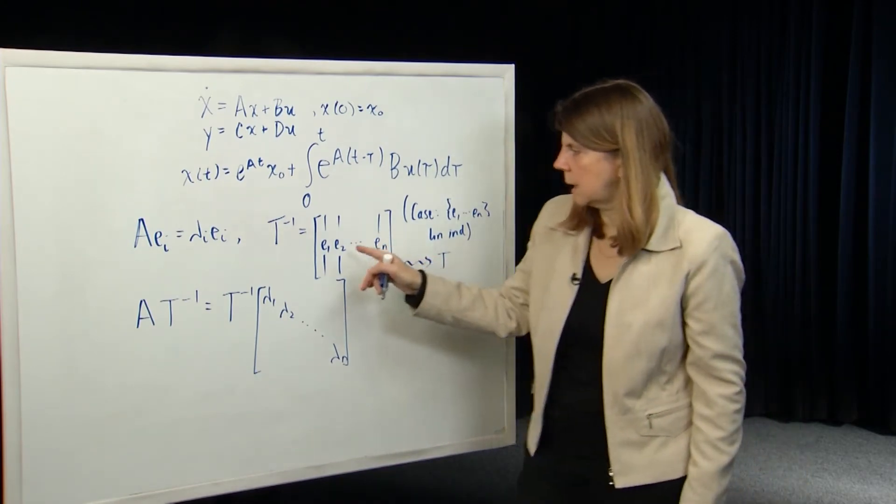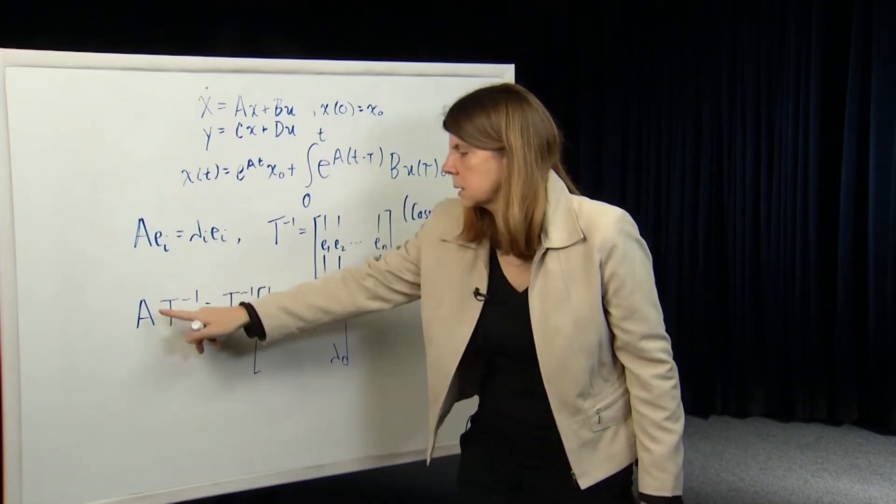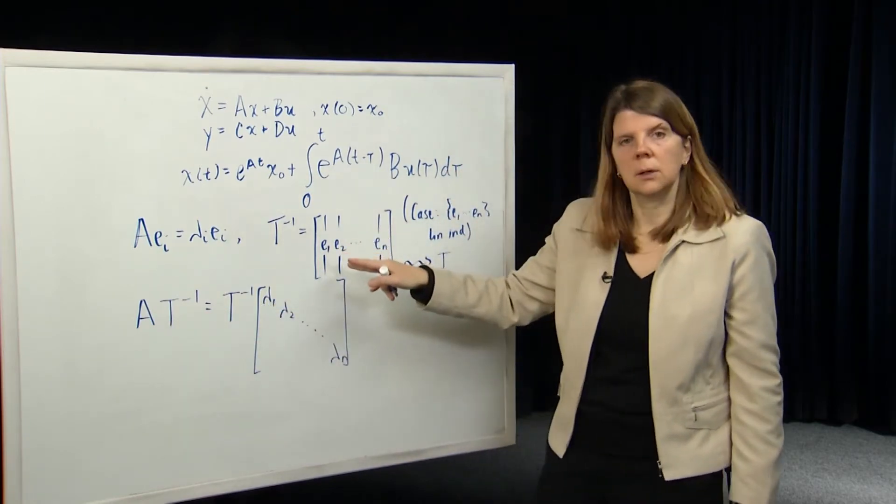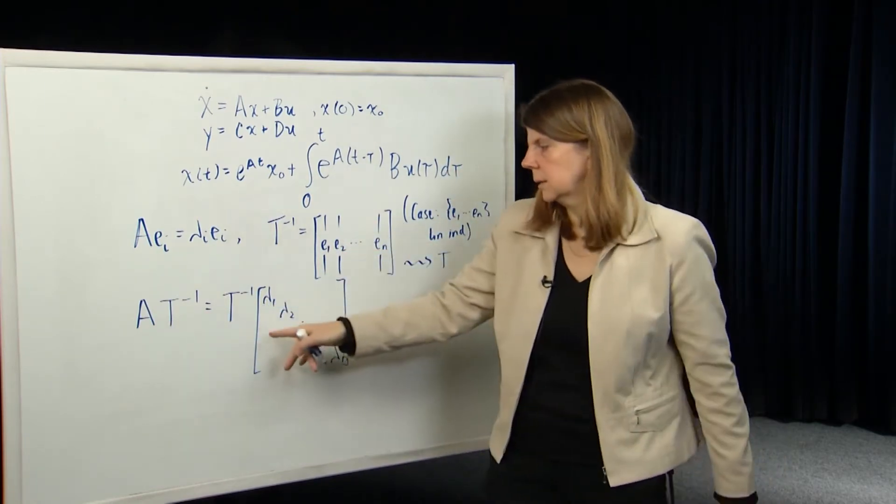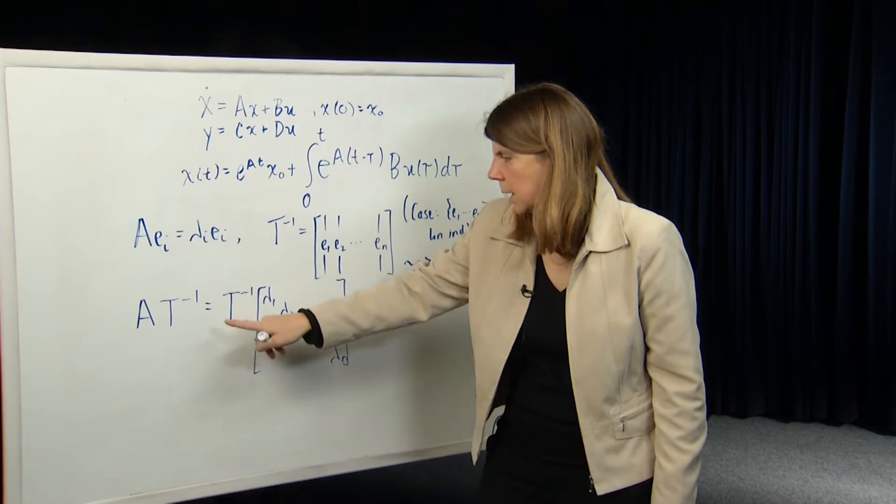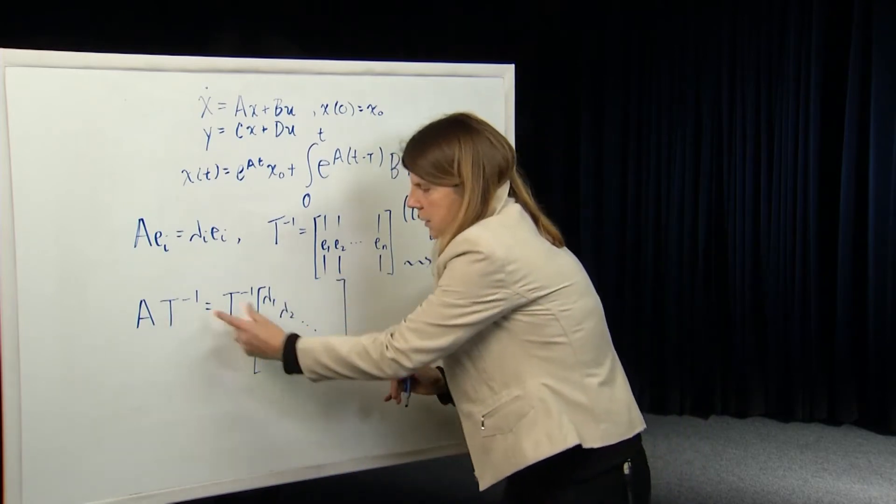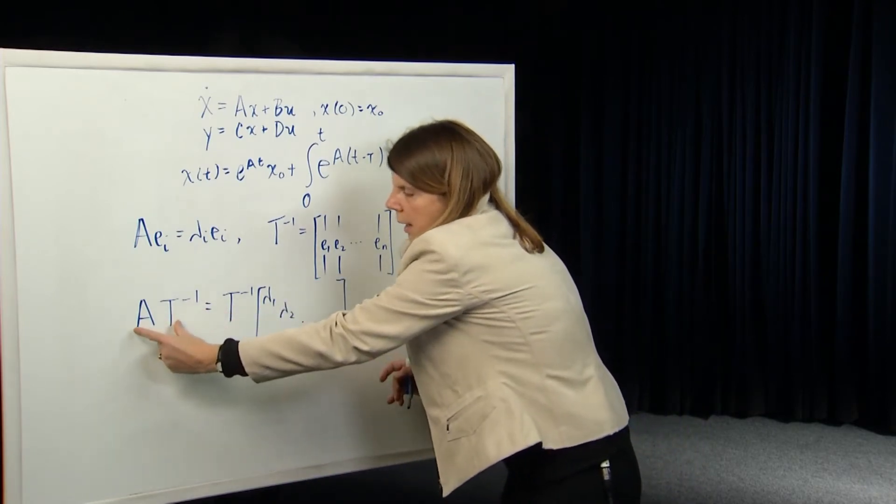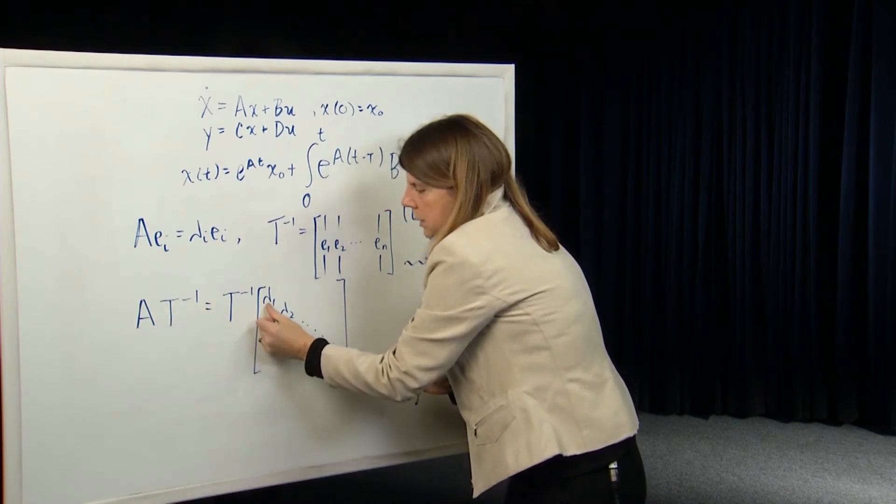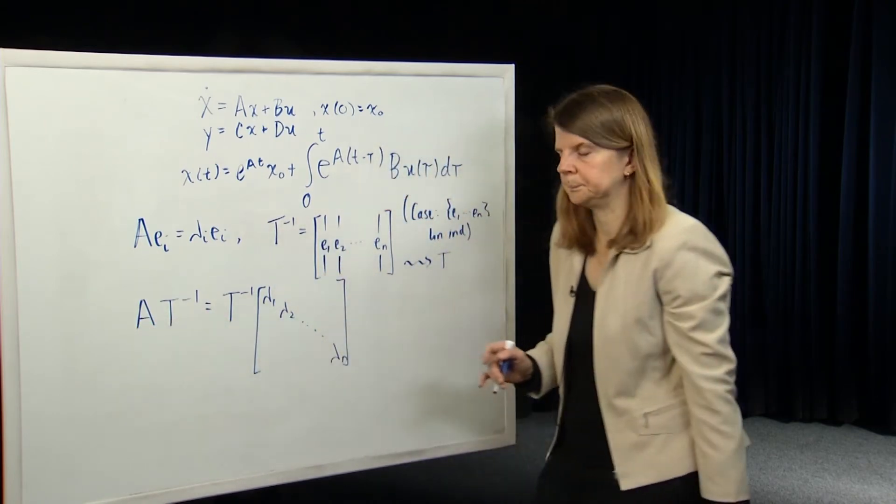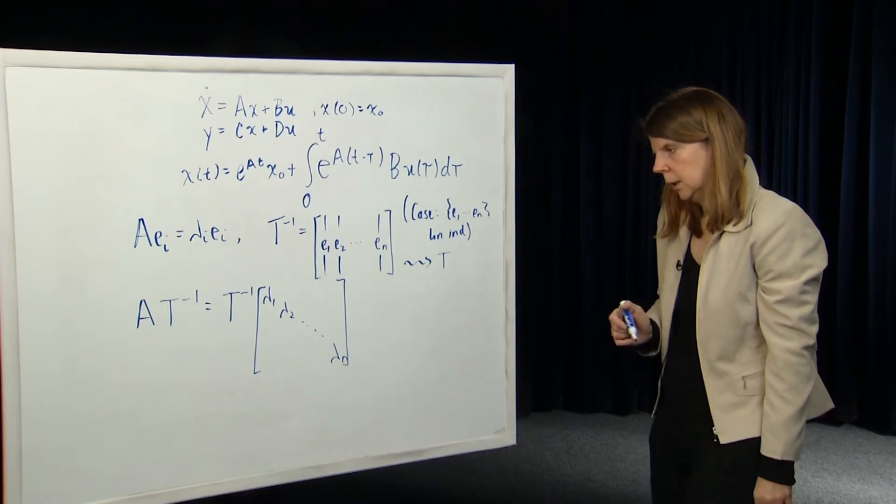And that just comes out by thinking about this product, multiplying it out, looking at the columns, and then factoring them out again. So now I've got, you can see in each column, if I consider the first column here and the first column here, I have Ae1 is equal to lambda 1 E1, et cetera.